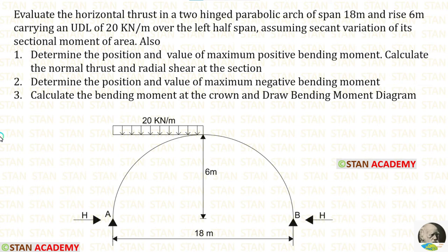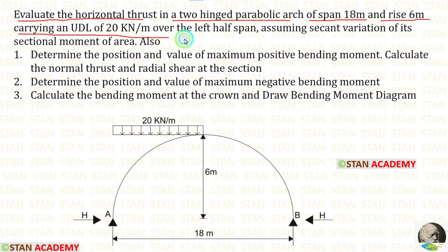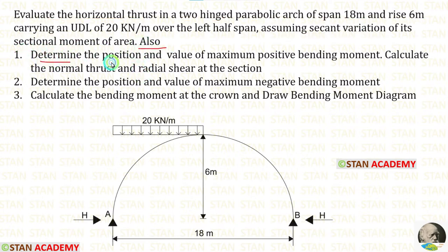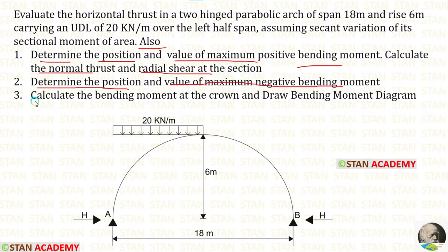Hello everyone. Today we are going to analyse a two-hinged parabolic arch. Let us see the question: Evaluate the horizontal thrust in a two-hinged parabolic arch of span 18 metres and rise 6 metres, carrying a UDL of 20 kilonewton per metre over the left half span, assuming secant variation of its sectional movement of area. Also, determine the position and value of maximum positive bending moment, calculate the normal thrust and radial shear at the section, determine the position and value of maximum negative bending moment, calculate the bending moment at the crown, and draw the bending moment diagram.